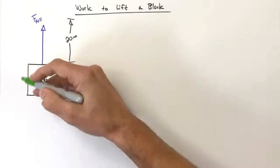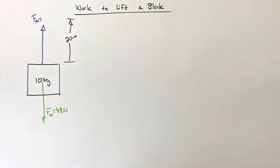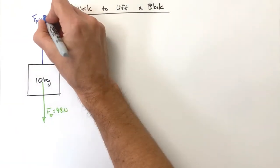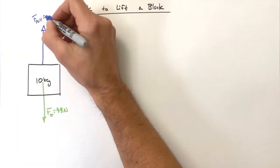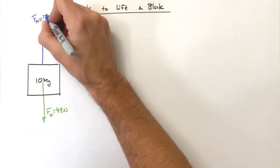Now in the first version of this problem, or the first case here, what I want to do is pull upward with a force that is equal to the force downward by gravity, so that means we're going to pull up with a force of 98 newtons over 20 meters.